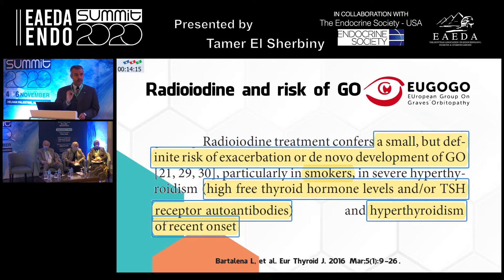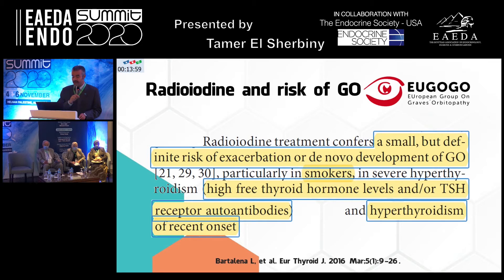Radioiodine confers a small but significant risk of developing or exacerbating Graves' orbitopathy. That is why if the patient has high risk, you cover them with prophylactic glucocorticoids. High-risk patients include: smokers, patients with high free thyroid hormones, patients with high TRAbs (TSH receptor antibodies), and patients with recent onset hyperthyroidism.